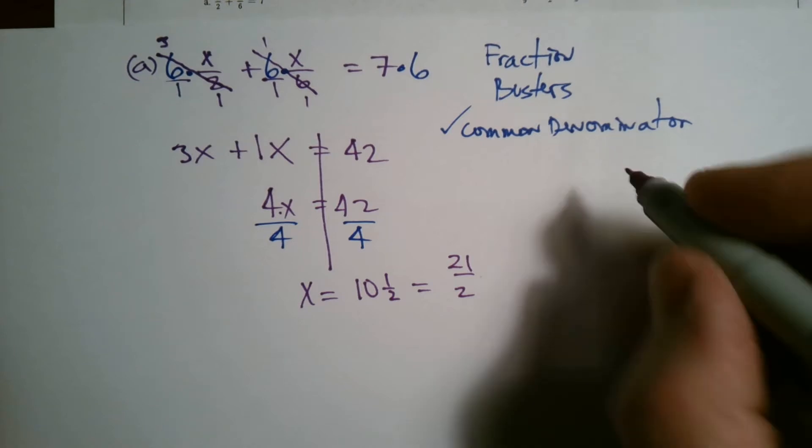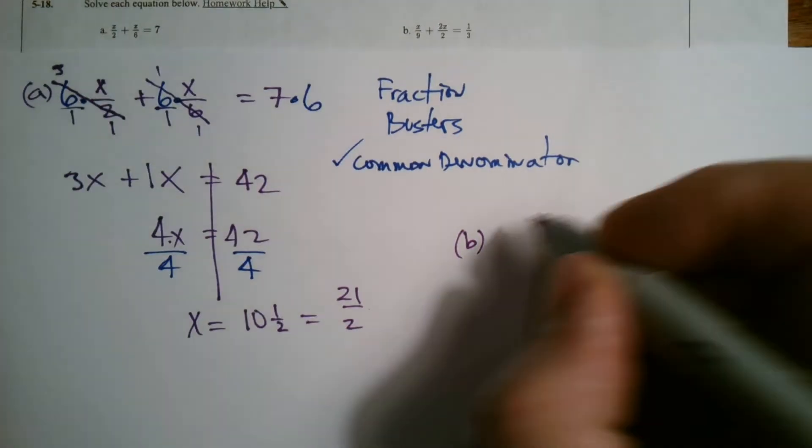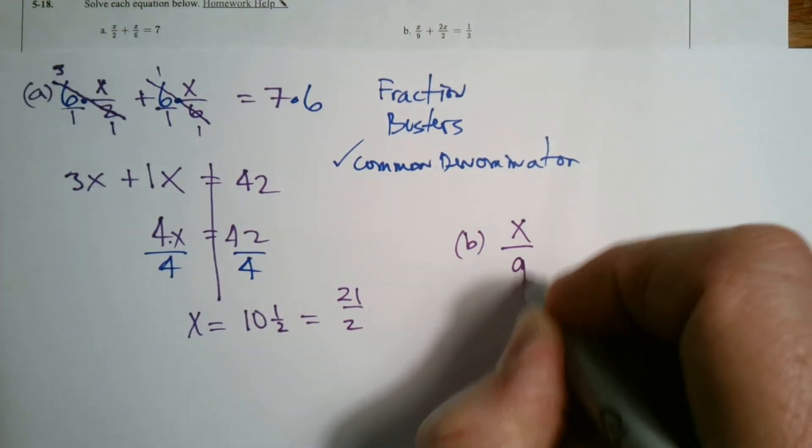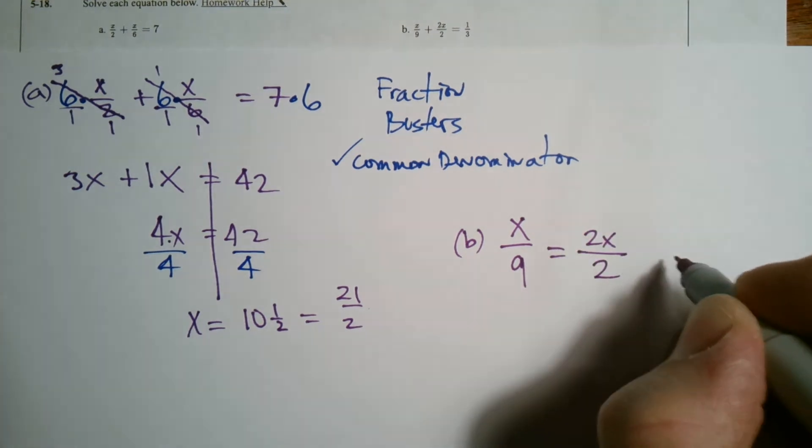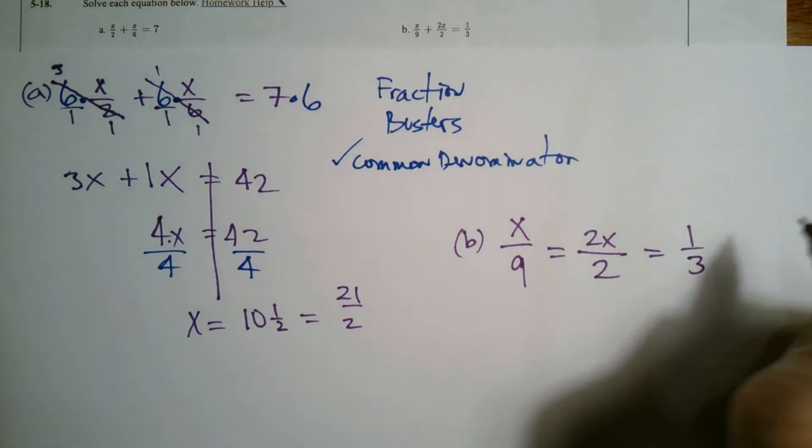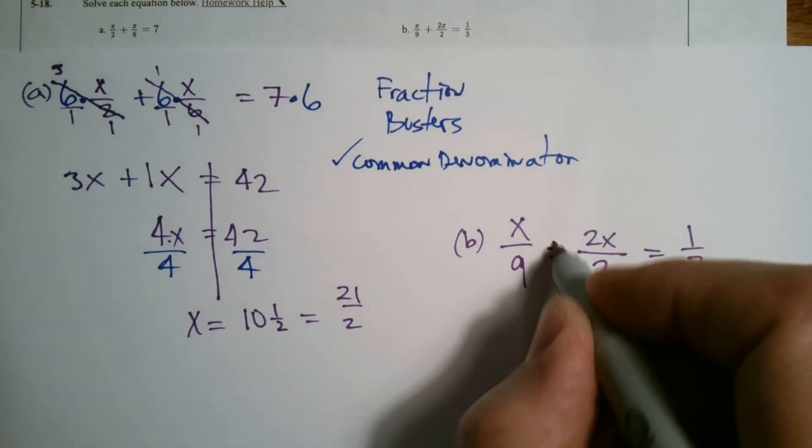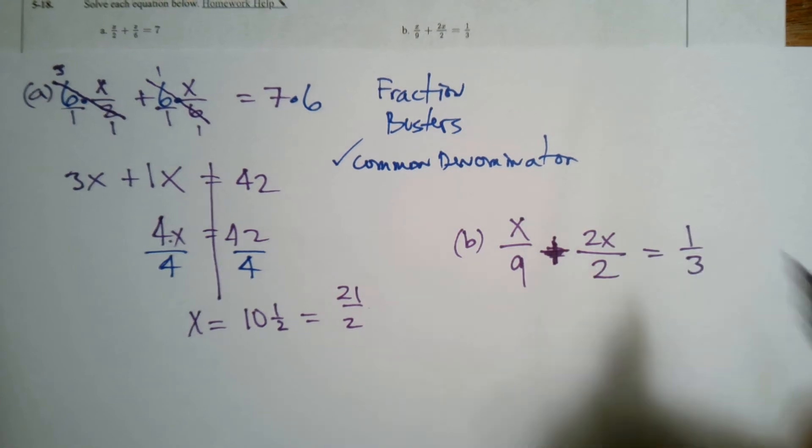So B, let me rewrite B for you so we can see it. B is x divided by 9 is equal to the quantity 2x divided by 2, which is equal to 1 third. Oh, I didn't mean to put equals there. That should be a plus sign. Sorry. That's a plus sign.